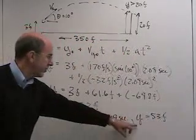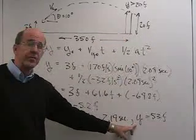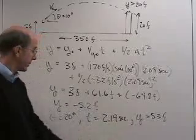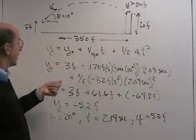So the height, let's see, 53 feet minus 20 feet, the ball would clear the fence by 33 feet. So there's quite a big difference between hitting the ball at 20 degrees and hitting it at 10 degrees.